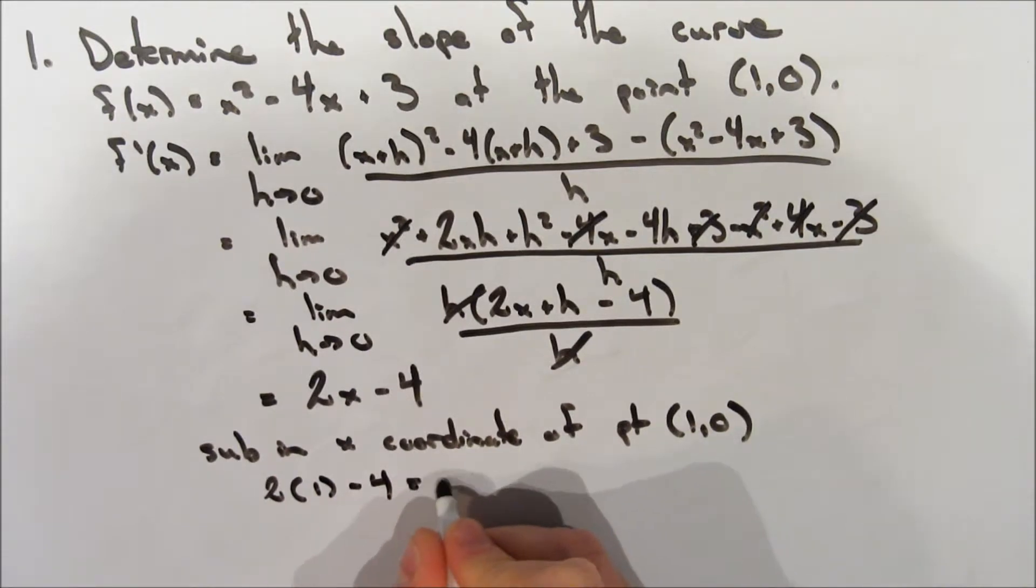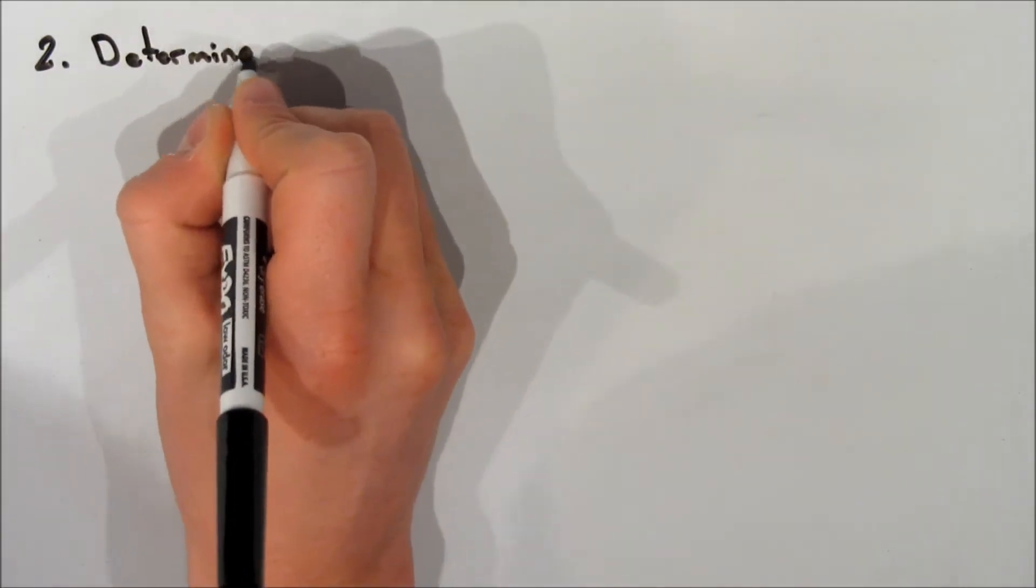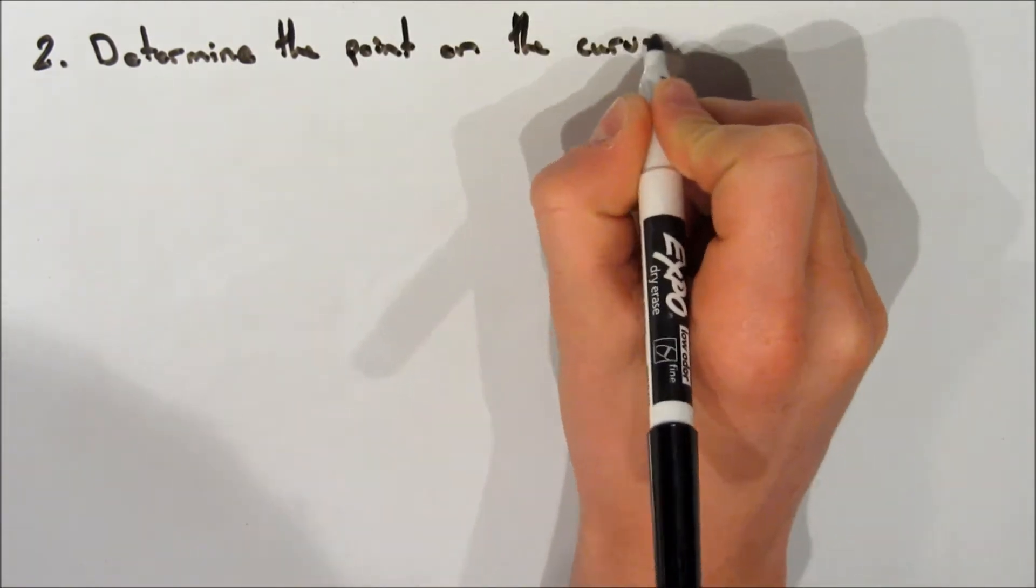So we're going to do 2 multiplied by 1 minus 4. And that gives us that the slope at the point (1, 0) is negative 2. Okay, so let's hop right into our next example.